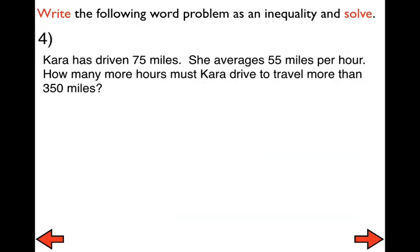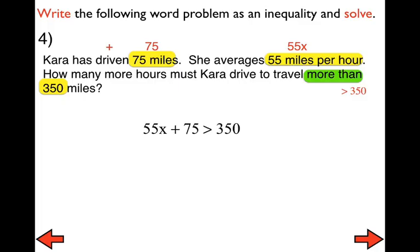Let's take a look at number four. Pause, set up your inequality, then press play to check it, pause again, solve it, and answer with a complete sentence. Kara has driven 75 miles and averages 55 miles per hour. How many more hours must Kara drive to travel more than 350 miles? 55 miles per hour is represented by 55x. She has already driven 75 miles. She wants to travel more than 350 miles, so 350 is our total. 'More than' is represented by the greater than symbol. Here is our inequality — pause, finish solving, and answer with a complete sentence.